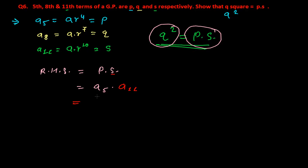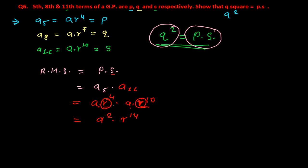In place of the 5th term I can write a·r to the power 4, and in place of the 11th term I can write a·r to the power 10. Overall, a times a gives a squared, and r to the power 4 times r to the power 10 gives r to the power 14, since the bases are the same and the powers are added.